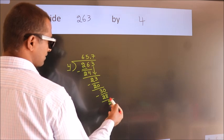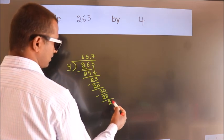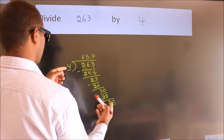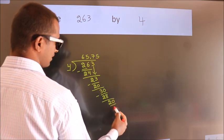After this we already have the decimal, so directly take 0. So 20. When do we get 20 in the 4 times table? 4 times 5 equals 20.